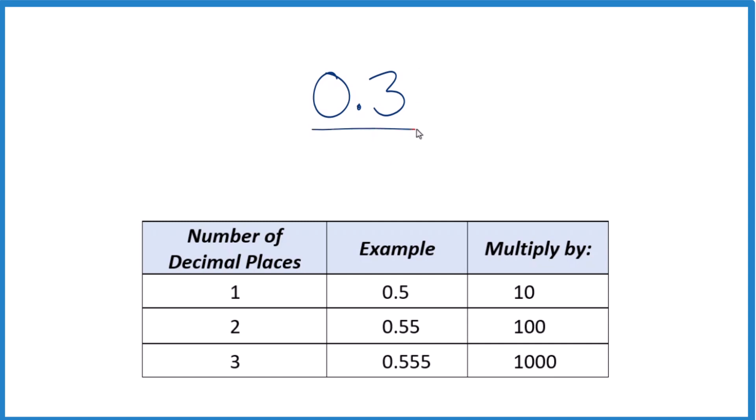So we're going to put this over one. That gives us the start of a decimal. The only problem is that we have 0.3 in the numerator. So we'd like this to be a whole number.